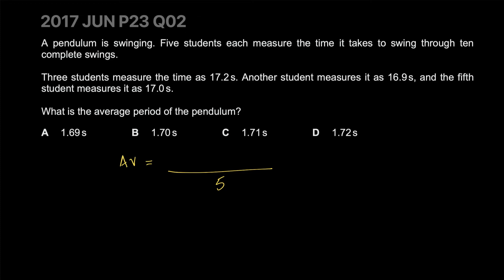You have five students doing five measurements, so it's divided by five. Three students measured 17.2, so that's 17.2 times 3, plus 16.9 for one, plus 17.2 for the fifth. It's basic algebra from this point. My answer is coming out to be 17.1. C is the answer.